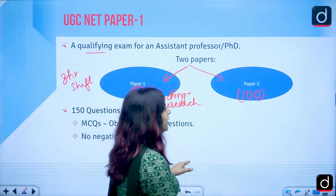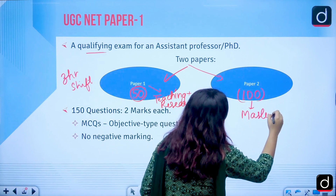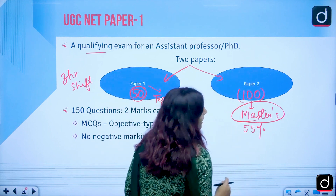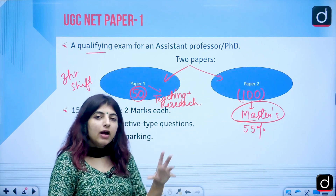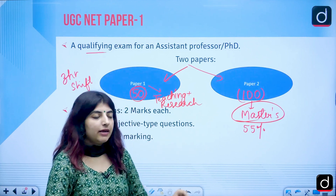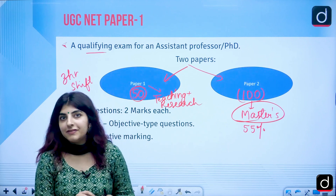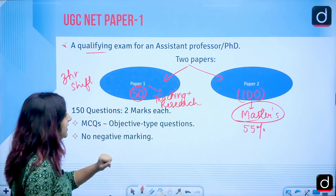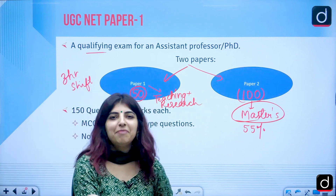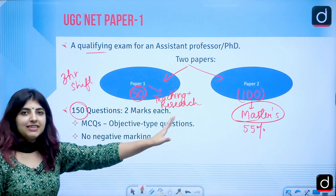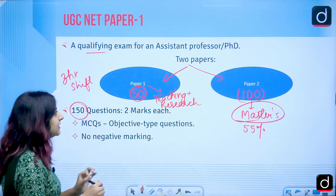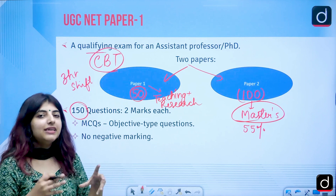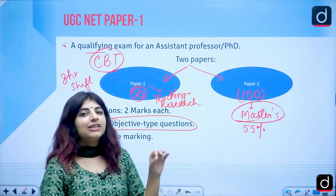Paper 2 is based on your master's degree subject, with a minimum eligibility criteria of 55% marks without rounding off. So you need at least 55% in your master's for the UGC NET examination. Paper 1 is common for all candidates, while Paper 2 syllabus is subject-specific. There are 150 questions in totality with two marks each, conducted in CBT mode — computer-based test mode.